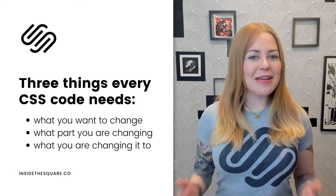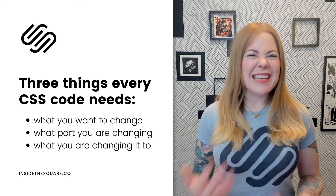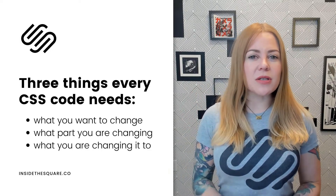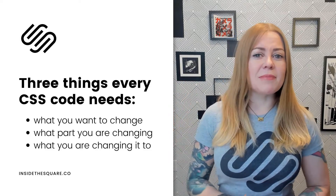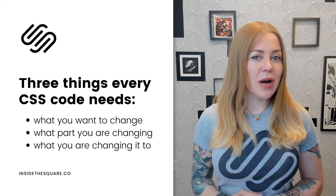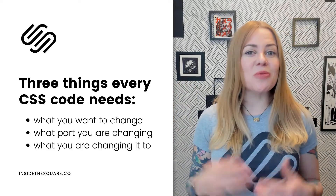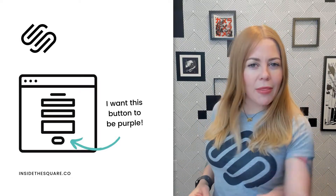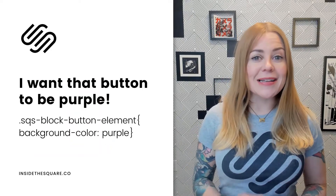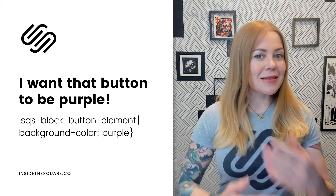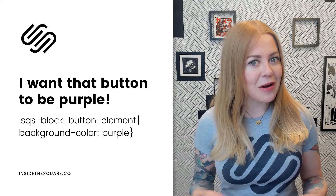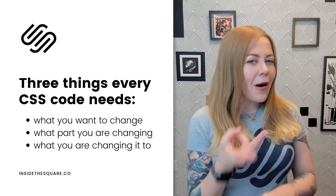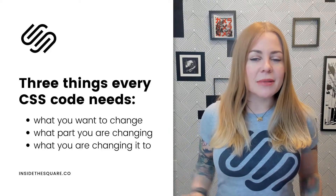There are three things you need in every piece of CSS code. I like to think of it like a set of instructions I'm giving the browser. I need to tell it three specific things: first, what's the item I'm trying to change; second, what part of this item am I trying to change; and third, what I'm changing it to. Here's an example — if I want that button to be purple, in CSS that is: SQS block button element (the thing I want to change), background color (what I want to change about it), and purple (what I want to change it to). It's the thing you want to change, what part, and what you want to change it to. Literally three things.